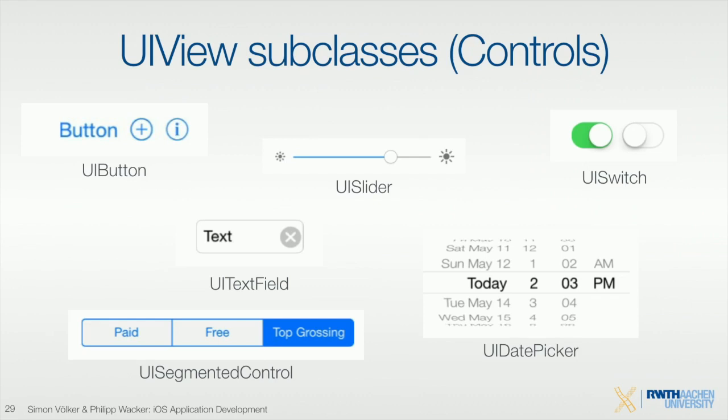There are also controller elements which include buttons, sliders, pickers, UI segments, and UI text fields — these are subclasses of views with certain functionality. These are all standard operations. You can go into Xcode and drag and drop them in. As Philip showed yesterday, you can use a button to switch to a different view in a simple way.